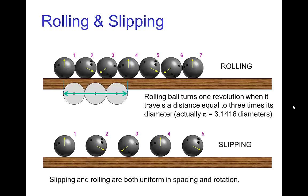When animated, rolling and slipping look very different. In actual bowling, you see both situations. Slipping is common when the ball is thrown very hard and fast, but as it slows down, it tends to roll.